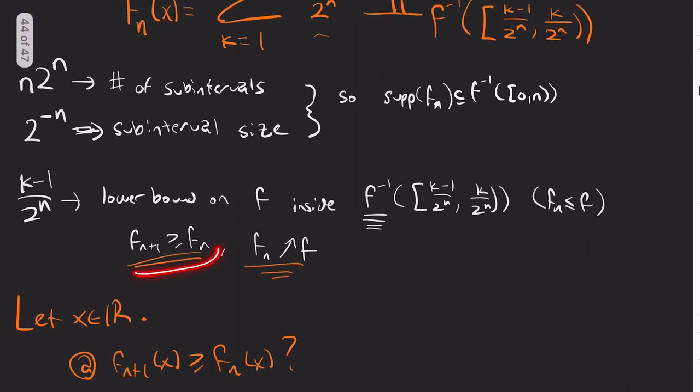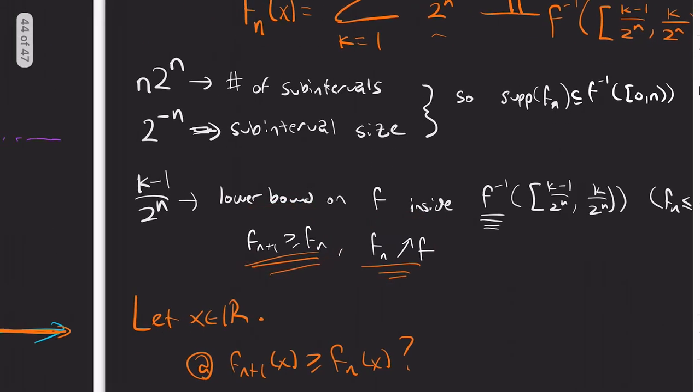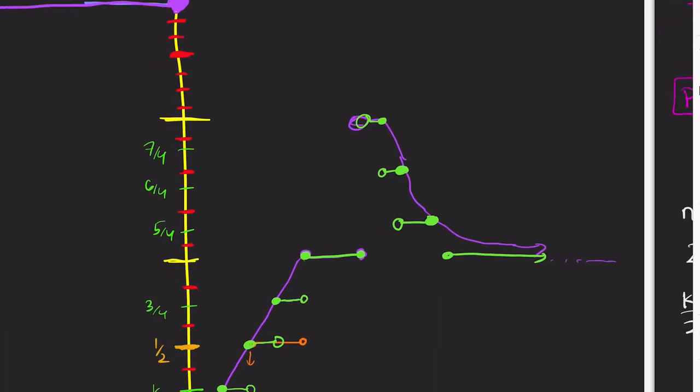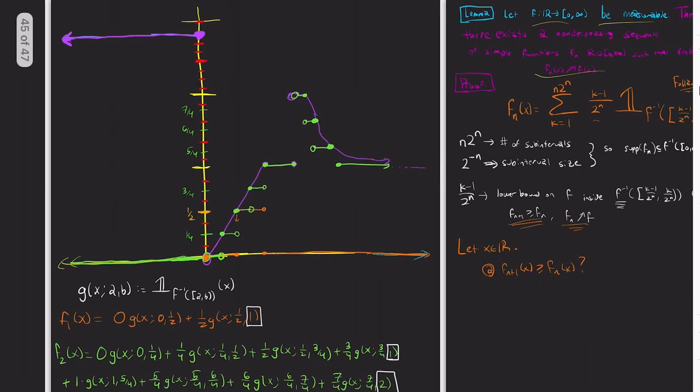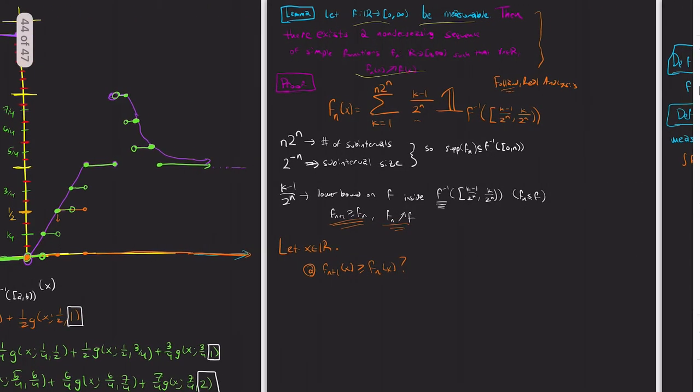So we have two things to show: this and this. But first I'd like to go through a visual of what this construction is actually doing. So let's zoom out here. So our construction is over here. So let's plug in n equals 1.